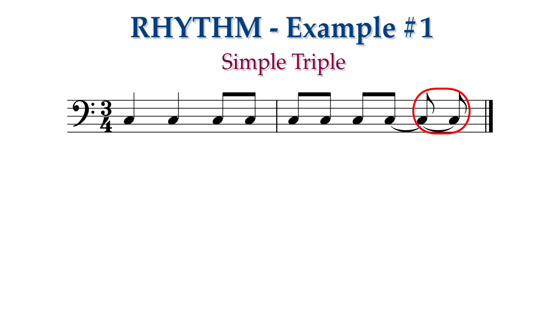Beat three is two eighth notes tied together, but we don't tie notes within the same beat, and we will combine them into a single note value, a quarter note, which is tied to the last eighth note of beat two.